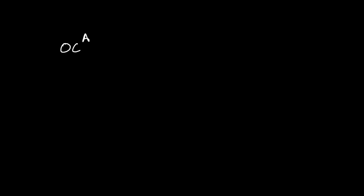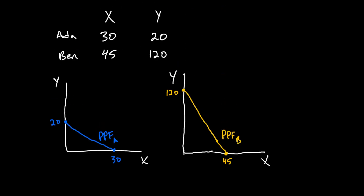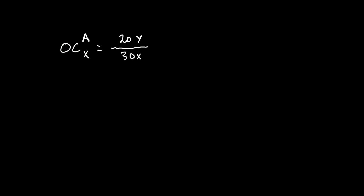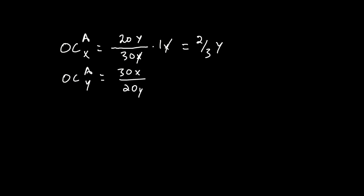Ada's opportunity cost of producing good x equals the total amount of good y she could produce in an hour (20 units) over the total amount of good x she could produce in an hour (30 units), with the x units canceling out, giving two-thirds of a unit of y. This is what Ada gives up every time she produces one unit of good x. Likewise, Ada's opportunity cost of producing good y is the reciprocal: 30 units of x over 20 units of y, which simplifies to three-halves x.